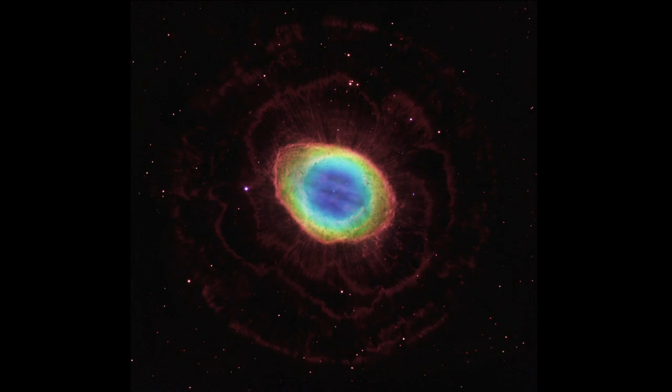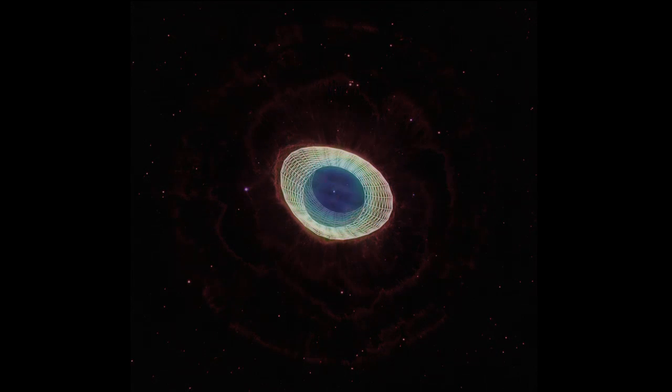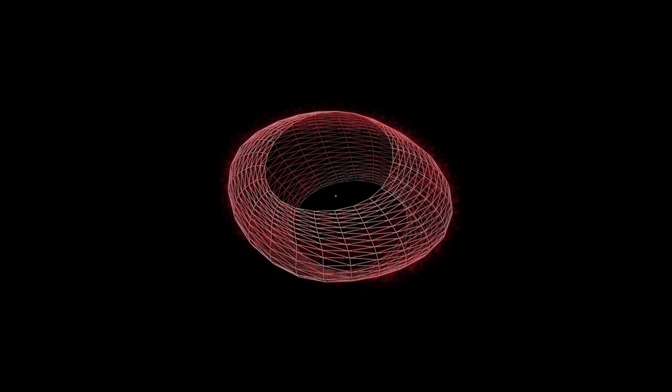The nebula turns out to have a much more complex shape than we can see from Earth. The main structure of the nebula is a broad ring of nitrogen. That's the red ring you see.